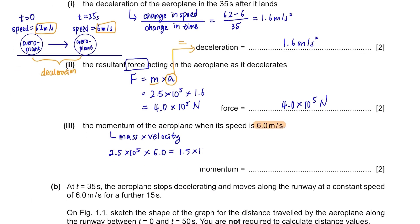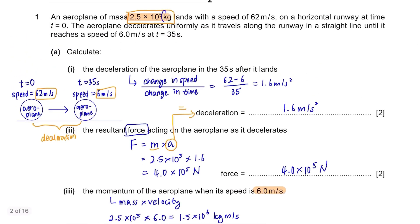1.5 times 10 to the power of 6. The unit is kilogram meters per second. This is two units put together.